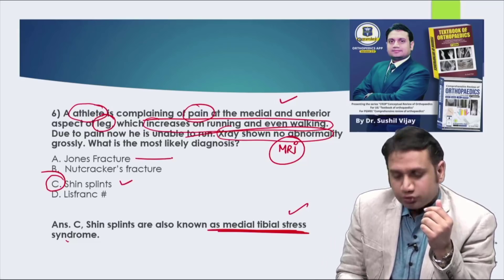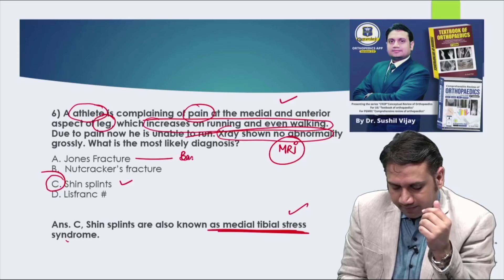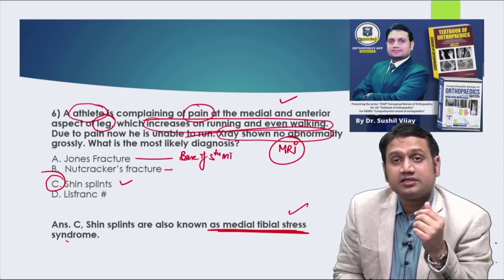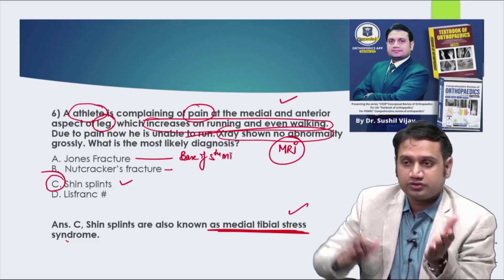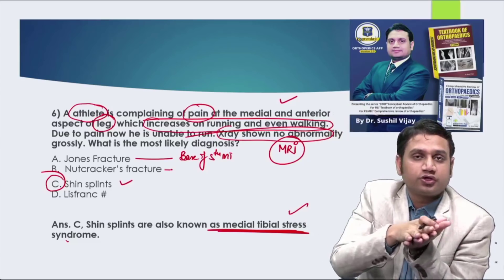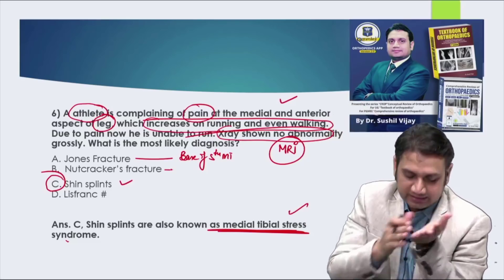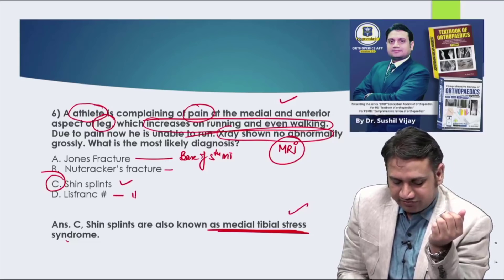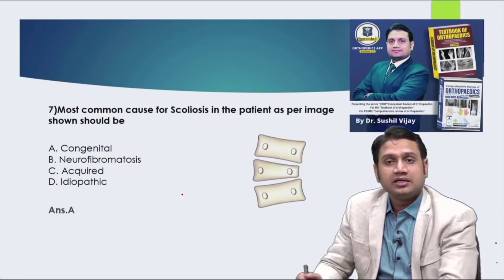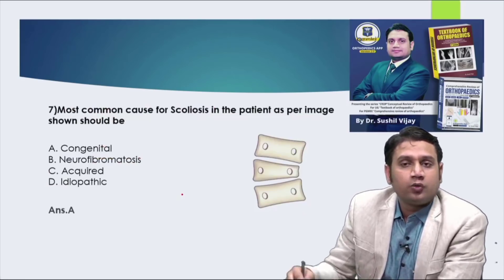The distractors in this question included Jones fracture — fracture of the base of fifth metatarsal; nutcracker fracture — cuboid injury occurring when pushing with the foot; and Lisfranc fracture — fracture through the tarsometatarsal joint. The correct answer here was stress fracture / shin splints (medial tibial stress syndrome).